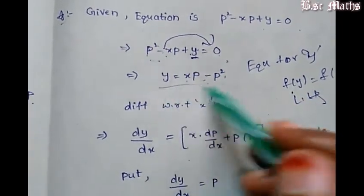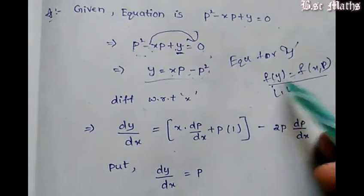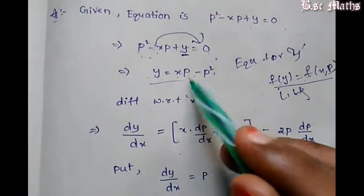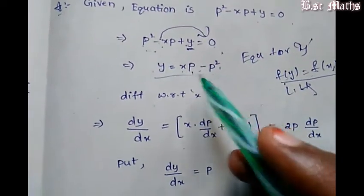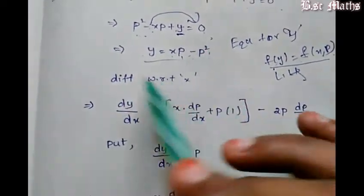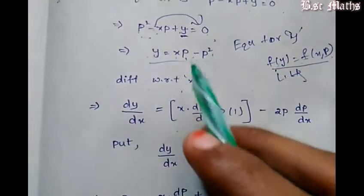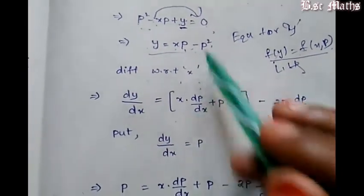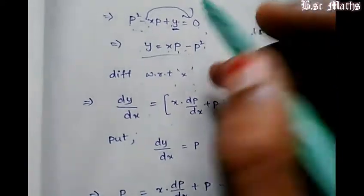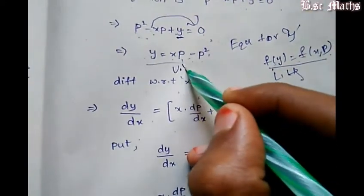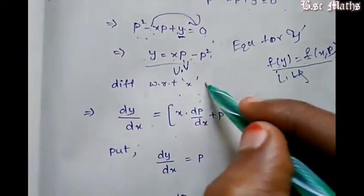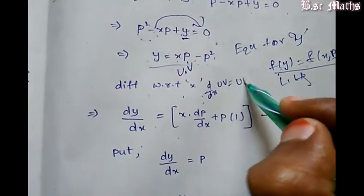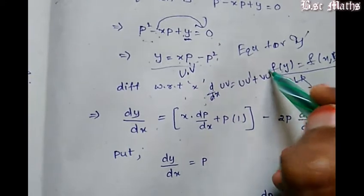Here we substitute the LHS: f of x, p — function in y and function in x, p. Next, differentiation with respect to x. We need to use the u into v rule. So dy/dx of u into v rule gives this formula: u·v dash plus v·u dash.